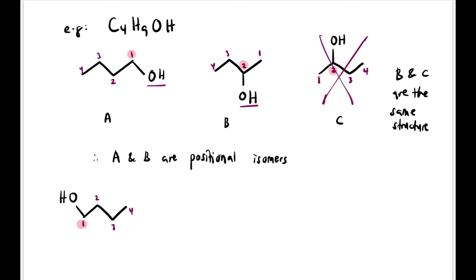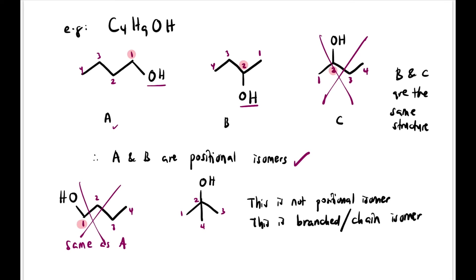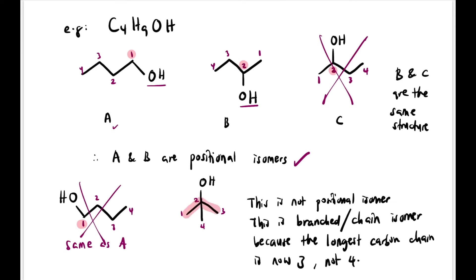What if we place the OH at the end of the other side? That structure is the same as A, so no need to draw it again. What if we shorten the chain to 3 carbons with a branch in the middle and the OH at the end? This is not a positional isomer compared to B — because we've created a branch and the carbon chain length has changed. Once the chain length changes, it automatically becomes a chain isomer. When naming, we prioritize classifying it as a chain isomer rather than a positional isomer.